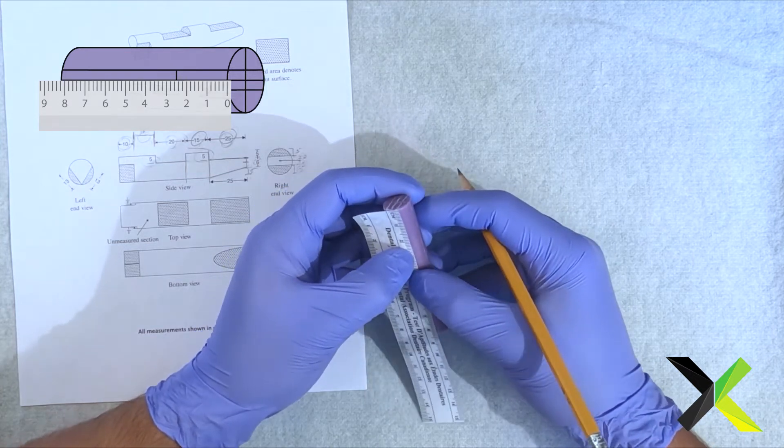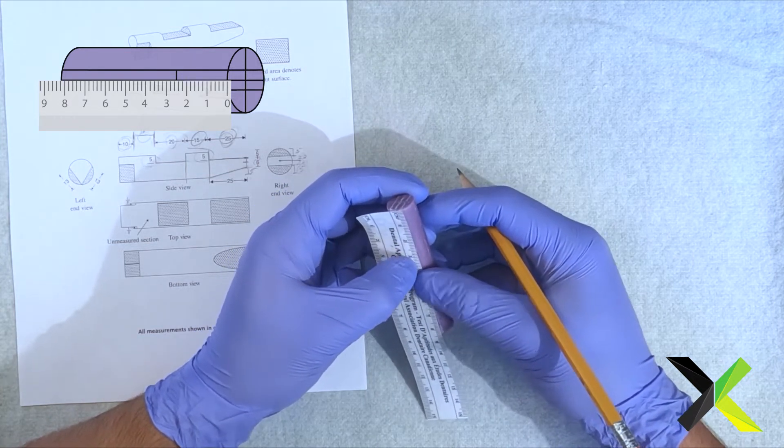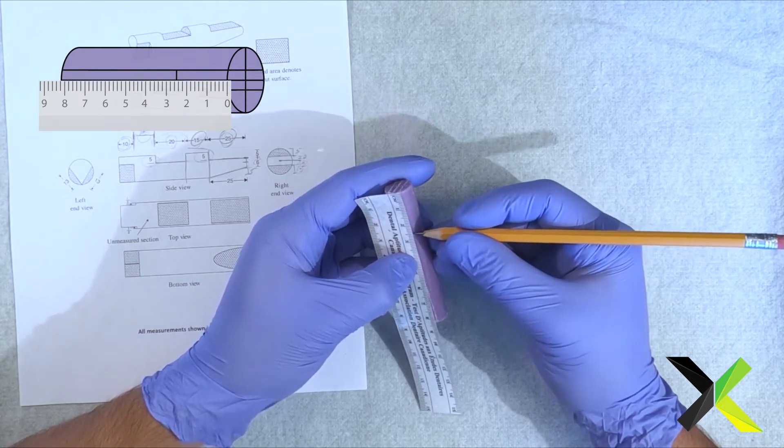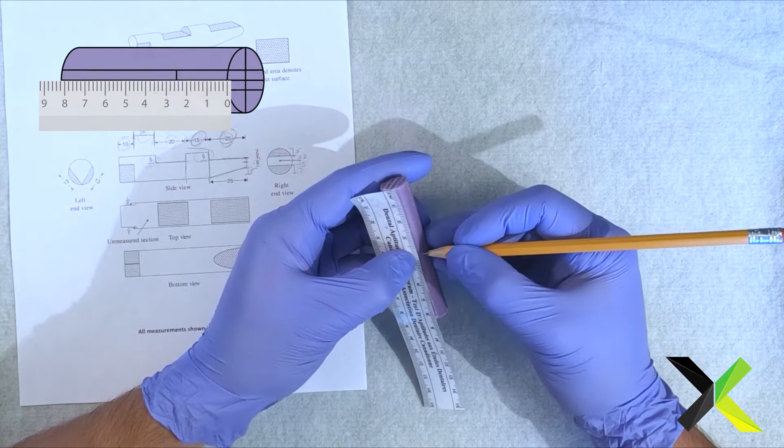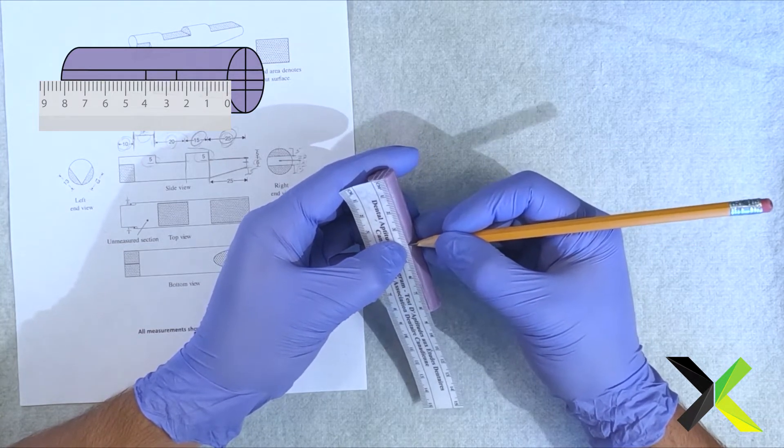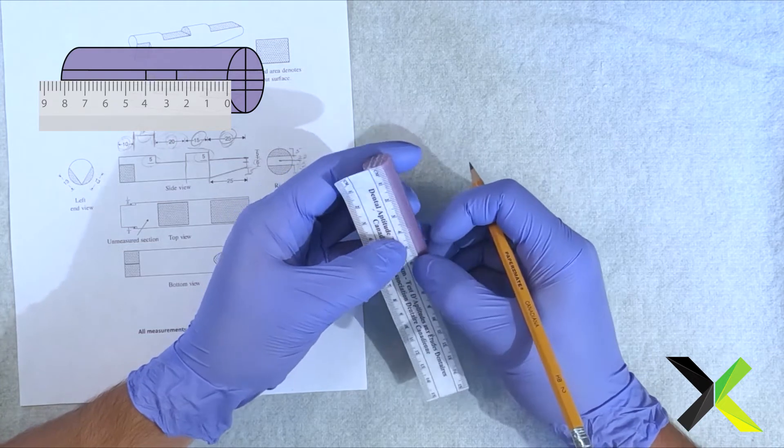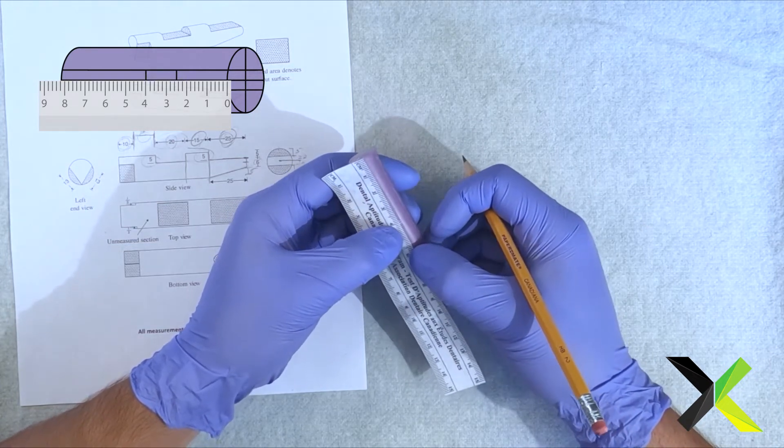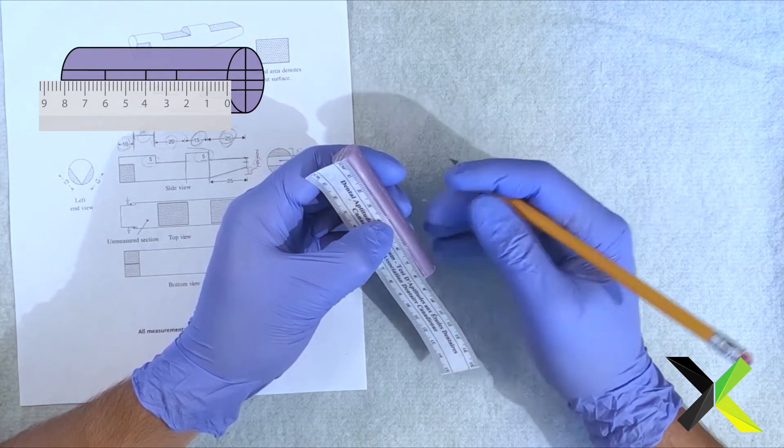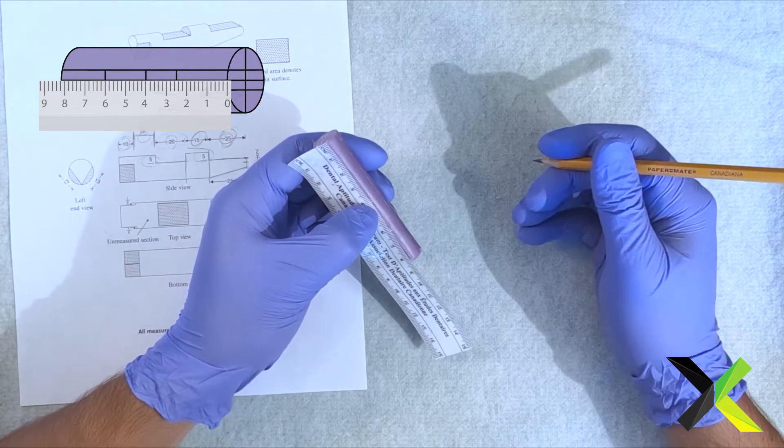Now from 25, what's the next one? 15. So we're measuring to 15 millimeters from this point. That's 5, here's another 10, right there. Now we need 20 from this point. So let's measure 20, right there.